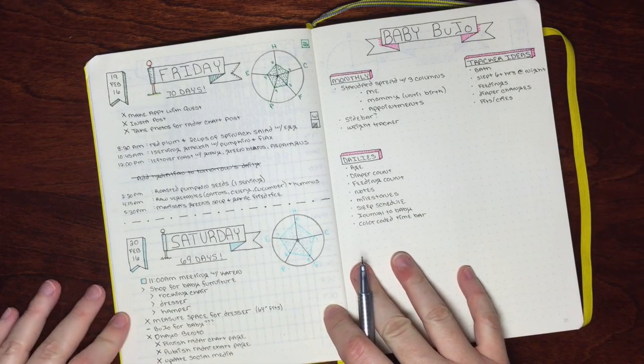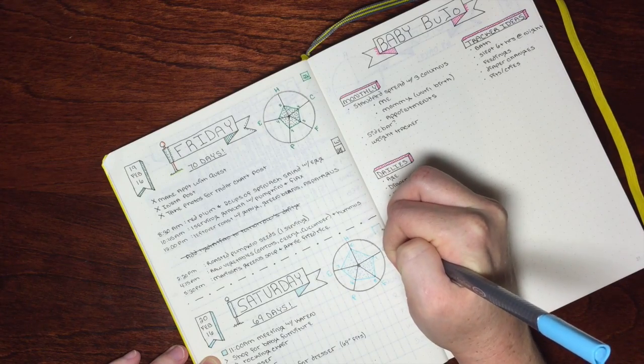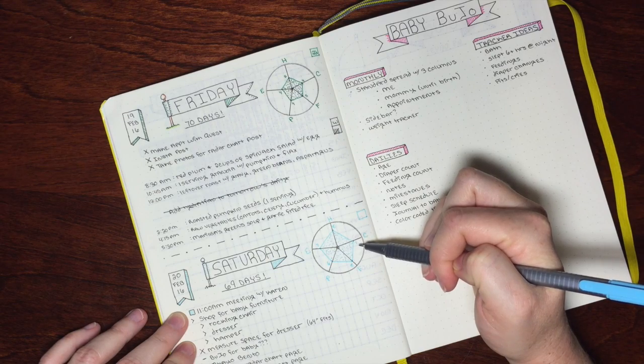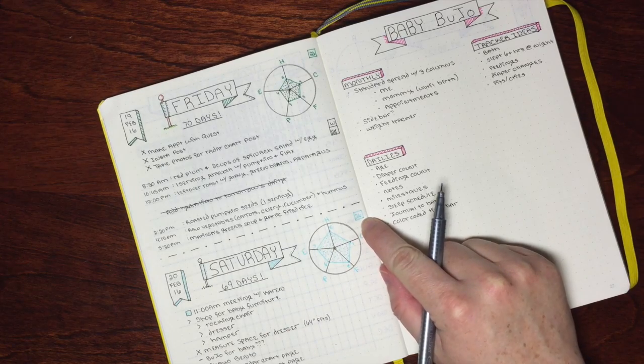Once that's finished, I go ahead and give myself an overall score. Add up all of these numbers. 36. So I give myself a score of 36.